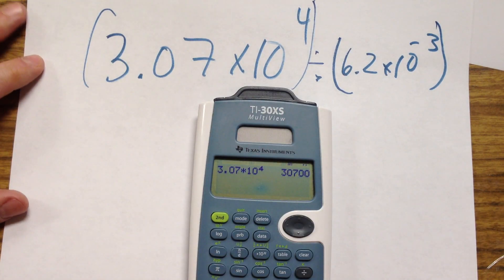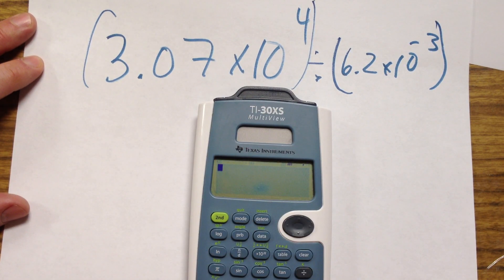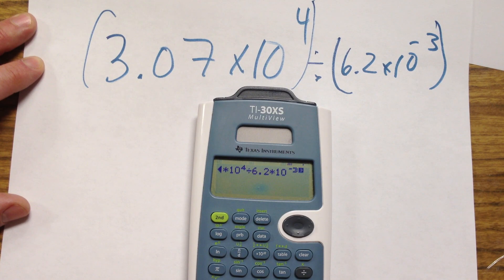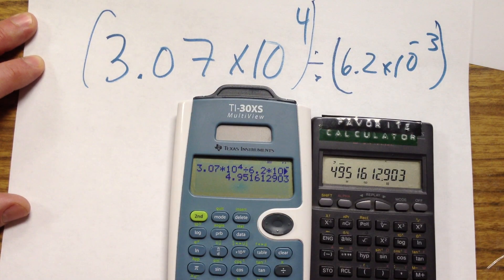However, with the math department calculator, this is not the case. They're very particular about orders of operation on here. So if we put that same number in, 3.07 times 10 to the fourth, divided by 6.2 times 10 to the negative third, this is not going to give you the same answer. Notice that our number back here was in the 4.9 million. Yeah, it's in almost 5 million, whereas this number is almost 5. So we got a difference of about a factor of a million.